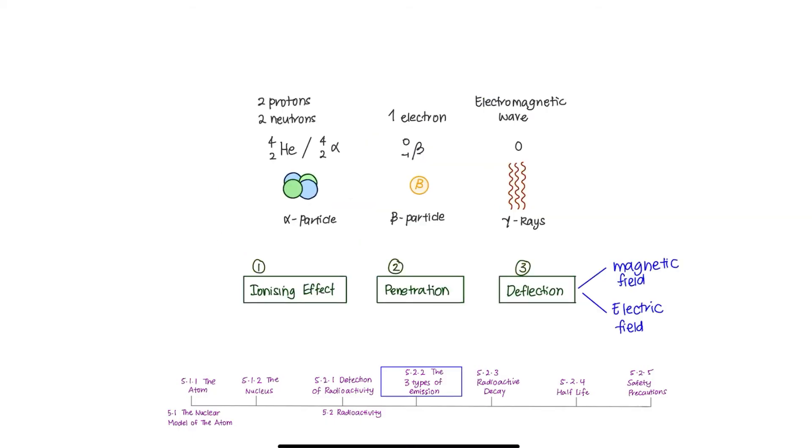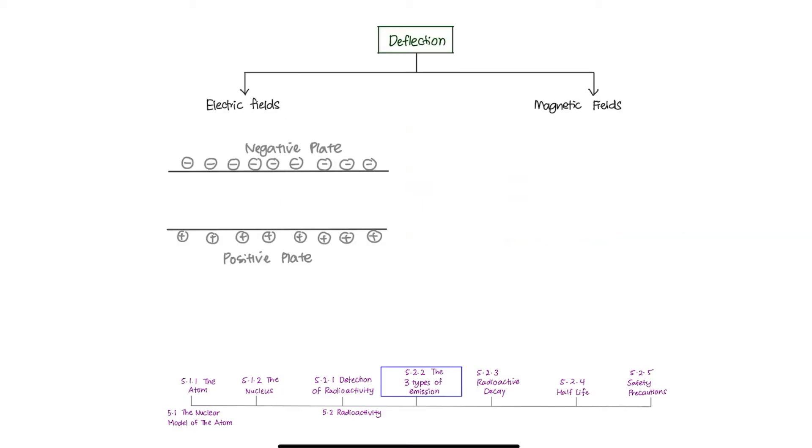And the last part, the third part, is the deflection of alpha, beta, and gamma in electric and magnetic field. A particle is deflected in an electric field if it has charge. Alpha particles are deflected towards the negative plate, since it is positively charged. Beta is negatively charged, so it will be deflected towards the positive plate. As gamma ray has no charge, it will not be deflected and it travels straight through between the plates.